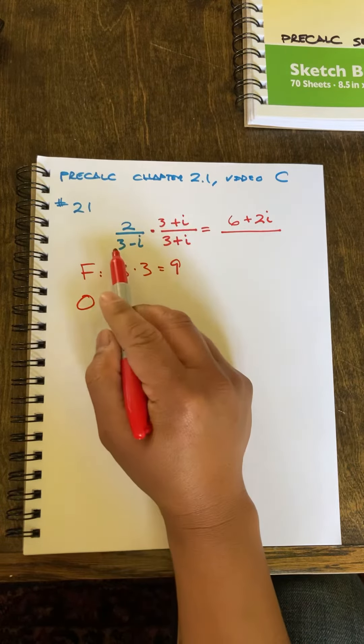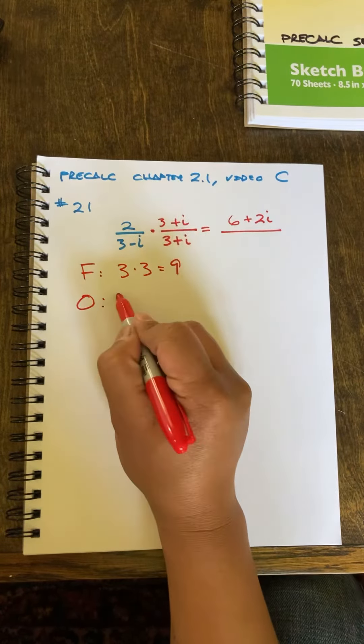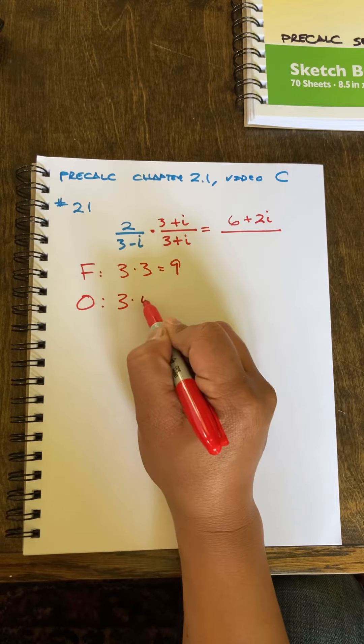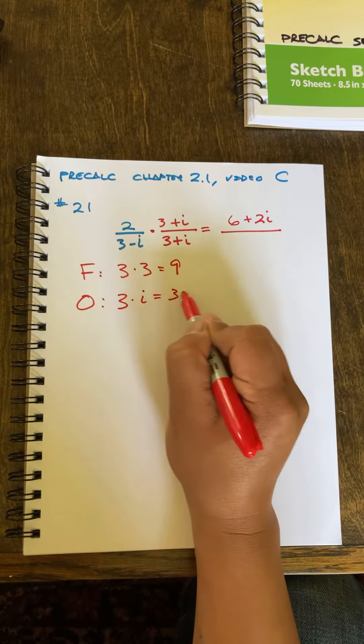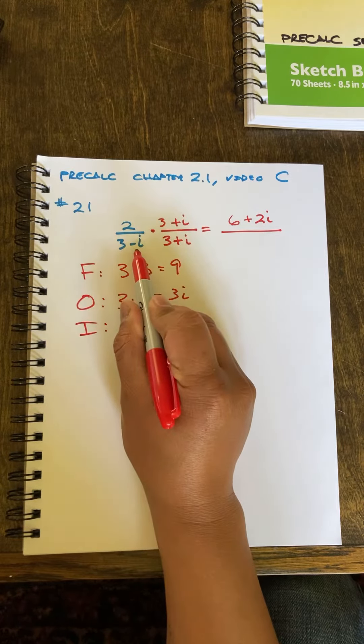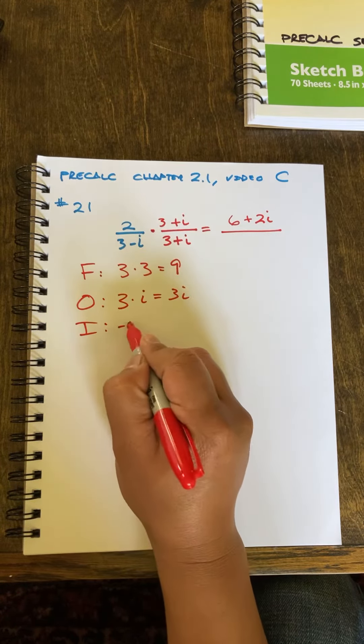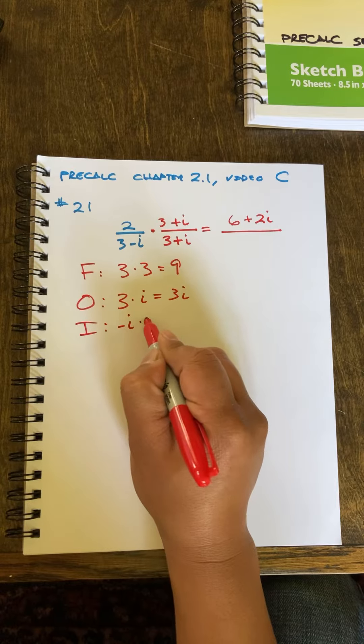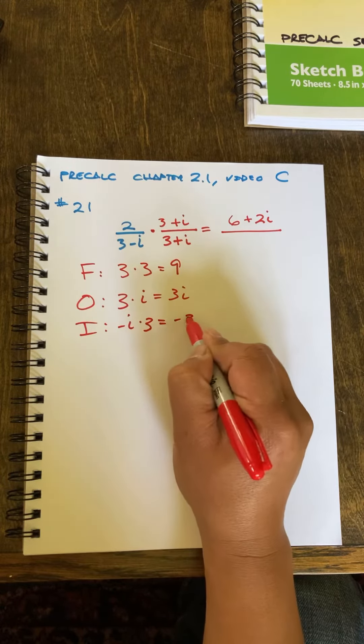My outer term is 3 times positive i, which is 3i. My inside term is negative i times 3, which is negative 3i.